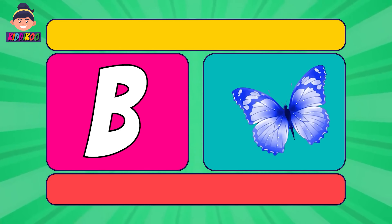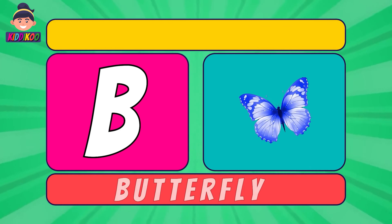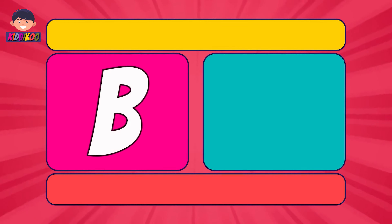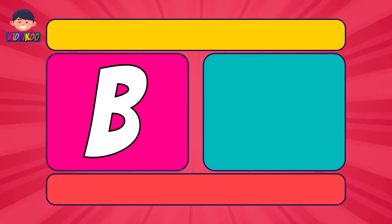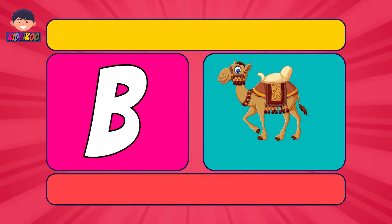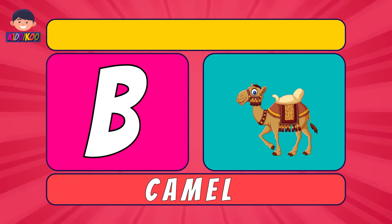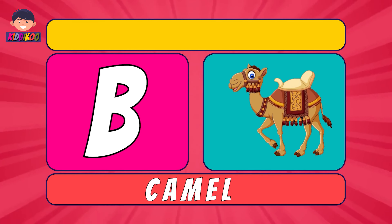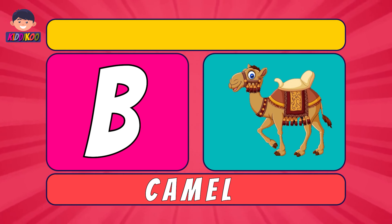Next letter is B. B for Butterfly. Butterfly. Next letter is C. C for Camel. Camel.